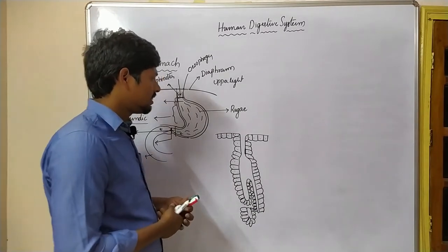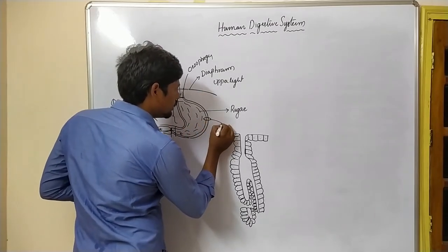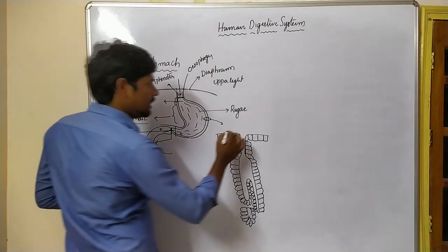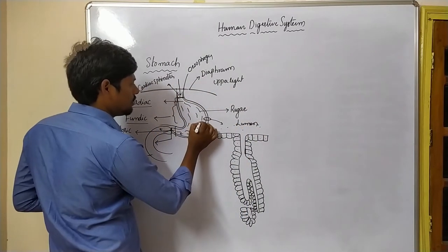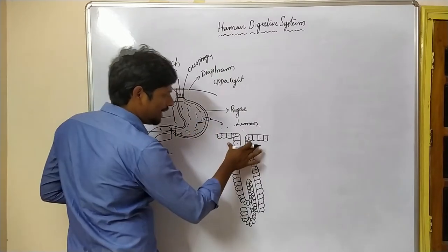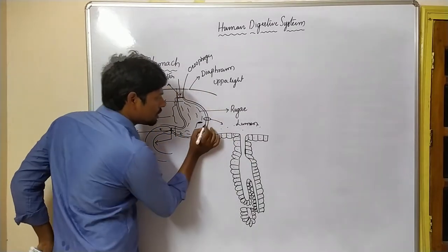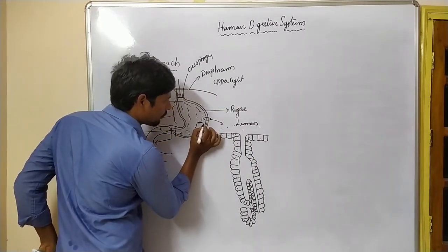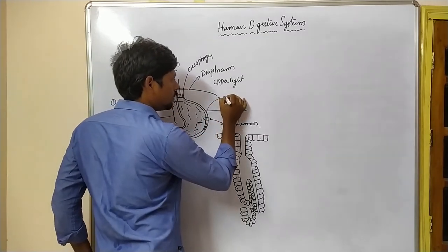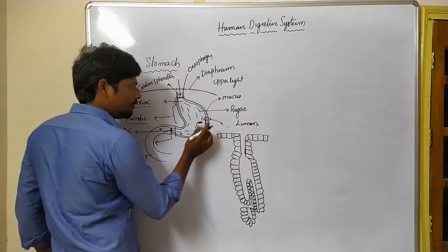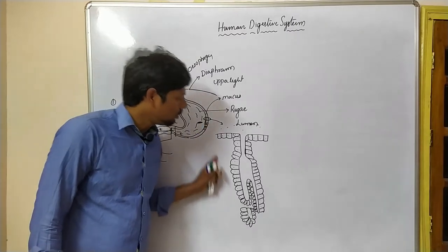These are the different types of cells present in this part. If you see a section of this part, the central open space is entirely called the lumen of the stomach. This entire surrounding part is a mucous pit. Internally, the lining forms mucous pits.